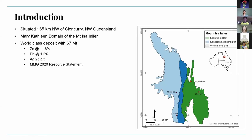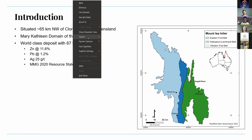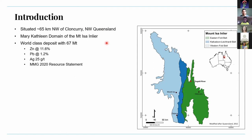Dougal River is situated in the Mary Kathleen Domain of the Northern Lyre, around 65 kilometers northwest of Cloncurry. It is considered a world-class deposit with 67 million tonnes of resource at 11.6 percent zinc, 1.2 percent lead, and 25 grams per tonne silver.